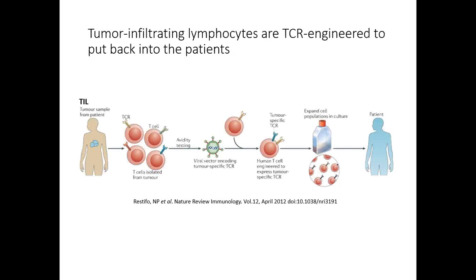Tumor infiltrating lymphocytes can be engineered with a tumor cell receptor and put back into the patient. First, T cells are isolated from the human body, then we use a viral vector expressing a specific tumor TCR. We then engineer this onto the human T cell, expand the T cell culture, and put them back into the patient.